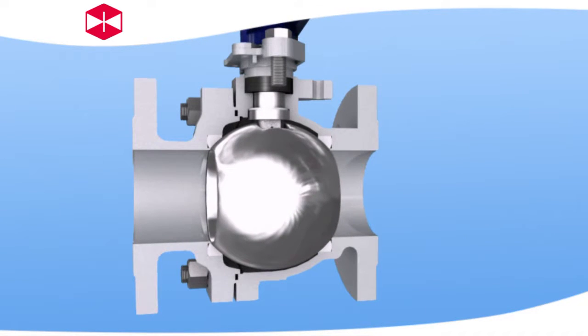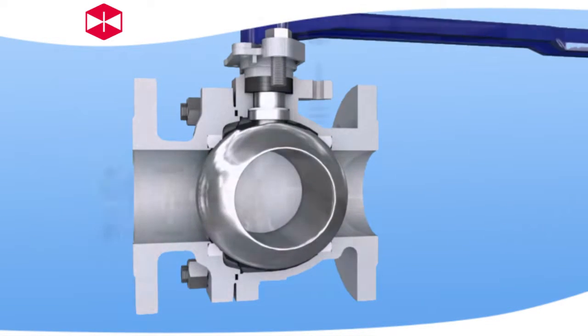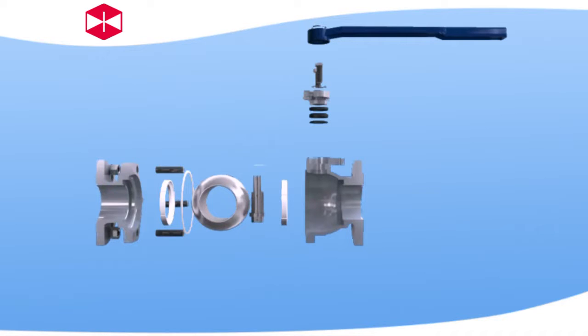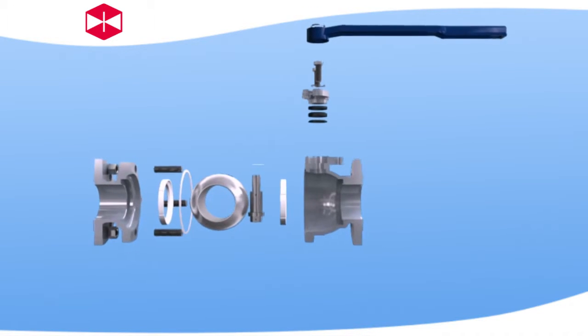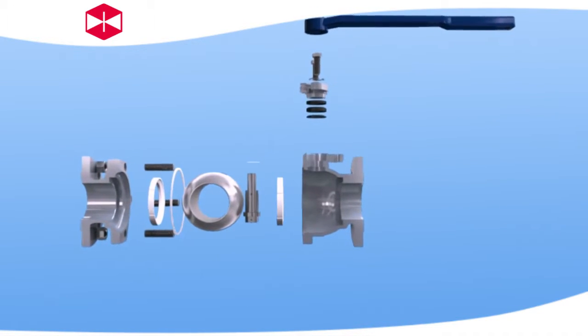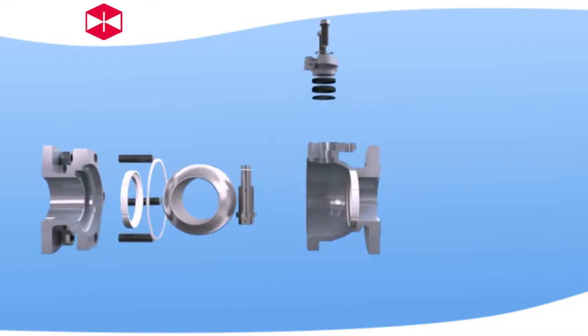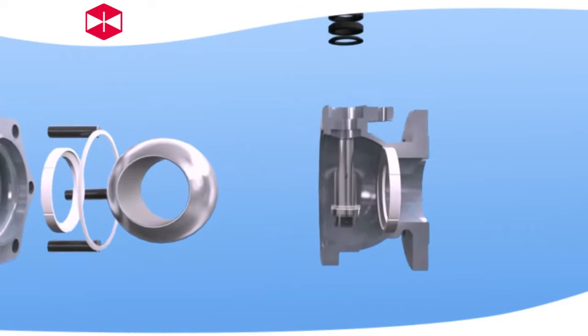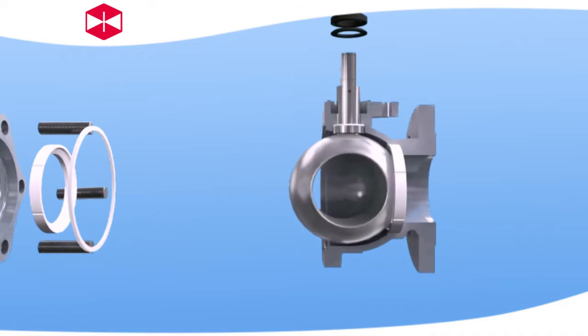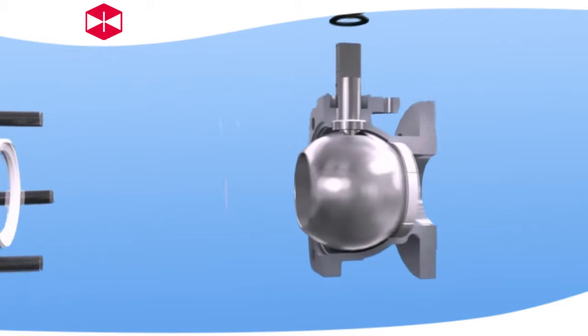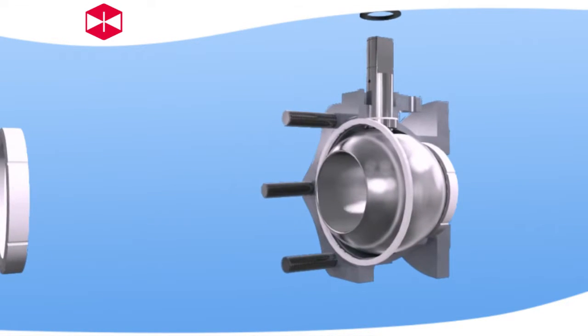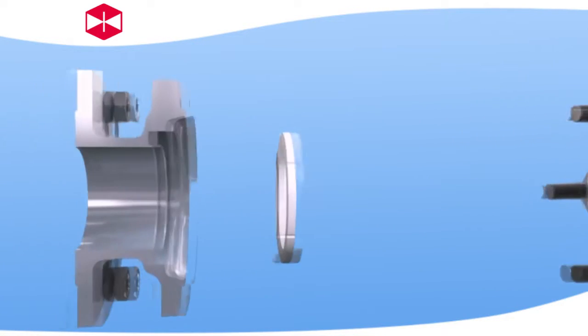When the valve is open, the ball holes line up with the pipeline, ensuring the minimum flow resistance of the pipeline. When the stem rotates up to 90 degrees, the ball hole is vertical to the valve channel, making the ball closely impacted into the seat ring on the exit end by medium pressure, which ensures the good sealing of the valve.